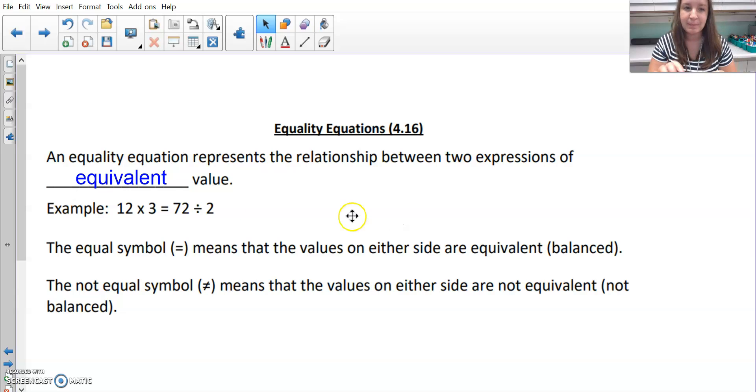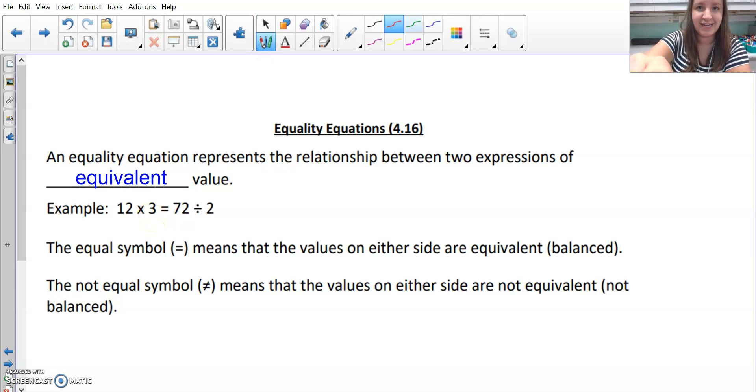An example of that would be that 12 times 3 is equal to 72 divided by 2. The reason is that 12 times 3 is 36 and 72 divided by 2 is also 36. So even though I did different operations and used different numbers, when I solve those expressions, they equal the same amount. Therefore, those expressions are equal to one another.